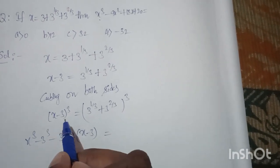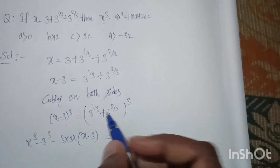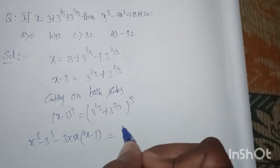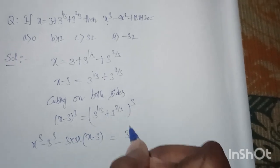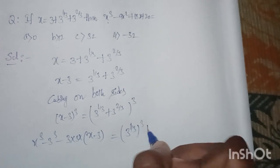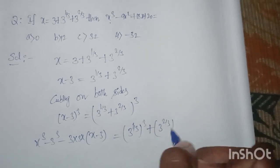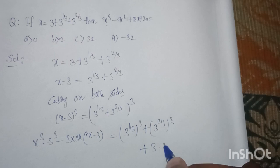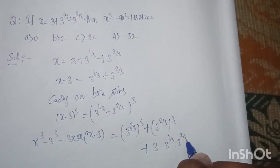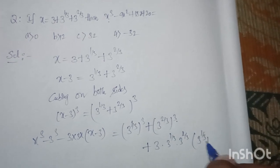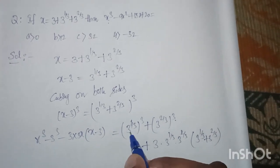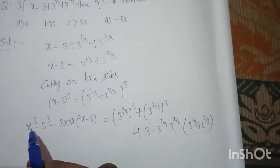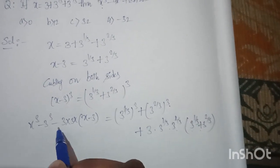On the RHS, it is in the form of (a + b)³, where a = 3^(1/3) and b = 3^(2/3). The (a + b)³ formula gives a³ + b³ + 3ab(a + b). So we get (3^(1/3))³ + (3^(2/3))³ + 3 · 3^(1/3) · 3^(2/3) · (3^(1/3) + 3^(2/3)).